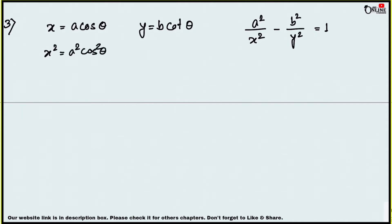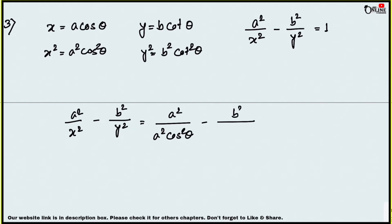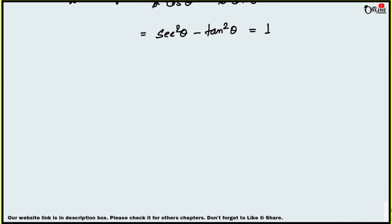Since x = a cos θ, we get x² = a² cos²θ. And y² = b² cot²θ. Substituting into a²/x² - b²/y²: a²/(a² cos²θ) - b²/(b² cot²θ). The a² and b² cancel, giving 1/cos²θ - 1/cot²θ, which is sec²θ - tan²θ = 1. Proved.